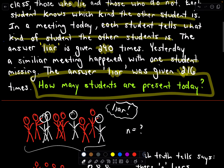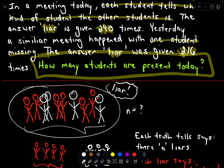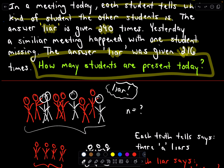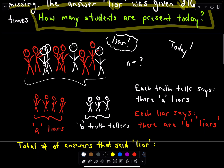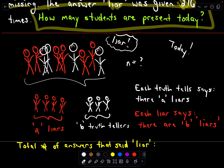So here we go. We want to figure out how many students are present today based on how many times we heard the answer 'liar' today and yesterday. We've got this group of people made up of truth tellers and liars, and we're trying to figure out the total number of people. I'm thinking about today specifically.